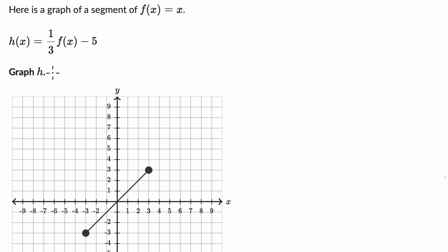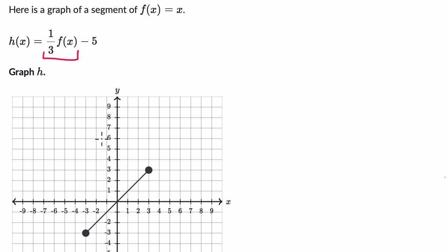Now I'm going to do this step by step. Before doing all of h of x, first I just want to think about what would one third of f of x look like. And then we're going to think about what happens if we then were to subtract five. So one third of f of x — whatever f of x is for a given x — it's just going to be one third of that.